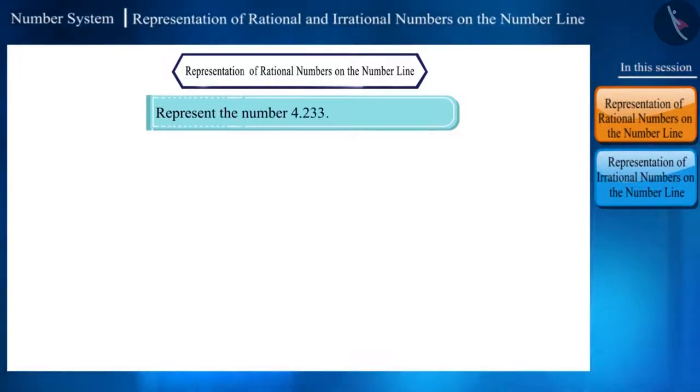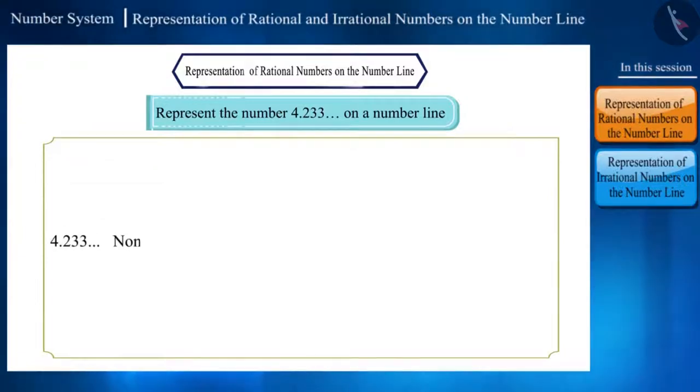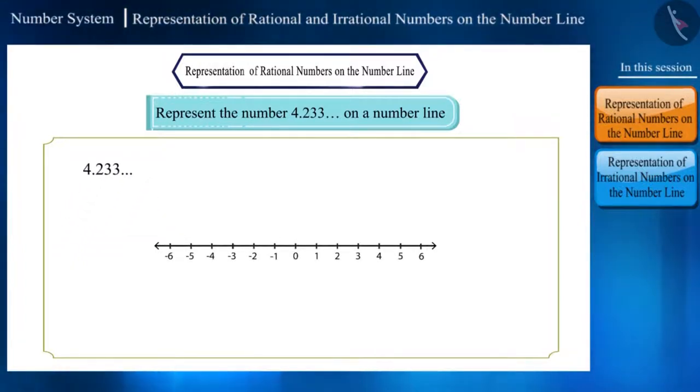Represent the number 4.233 on a number line. This is a non-terminating recurring number. How will we represent this on the number line? Let's see. Friends, this number will lie between the numbers 4 and 5. This is a large range, so locating the number at the right position would be difficult. So let us divide this range into 10 equal parts.